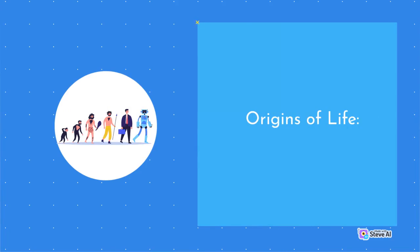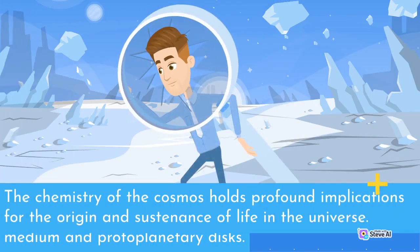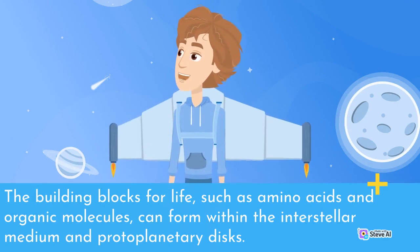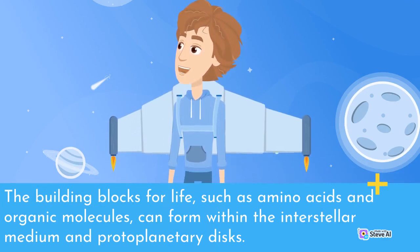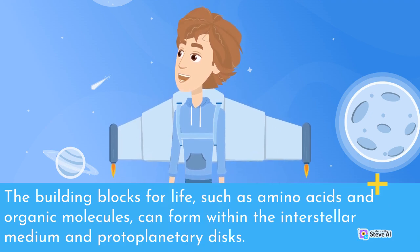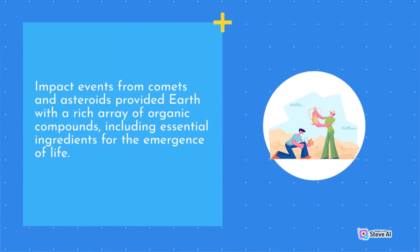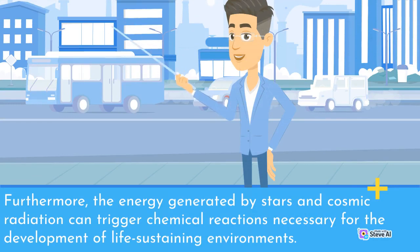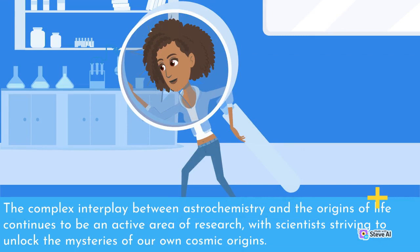The chemistry of the cosmos holds profound implications for the origin and sustenance of life in the universe. The building blocks for life, such as amino acids and organic molecules, can form within the interstellar medium and protoplanetary disks. Impact events from comets and asteroids provided Earth with a rich array of organic compounds, including essential ingredients for the emergence of life. Furthermore, the energy generated by stars and cosmic radiation can trigger chemical reactions necessary for the development of life-sustaining environments. The complex interplay between astrochemistry and the origins of life continues to be an active area of research, with scientists striving to unlock the mysteries of our own cosmic origins.